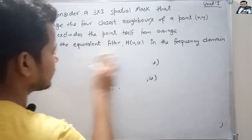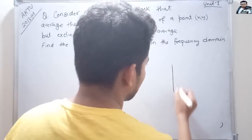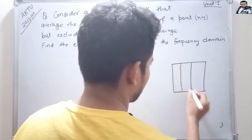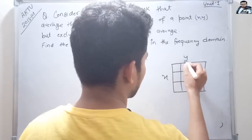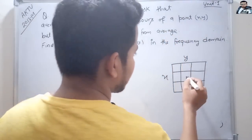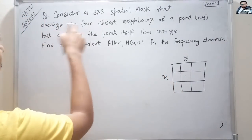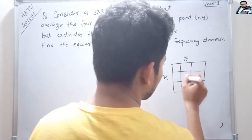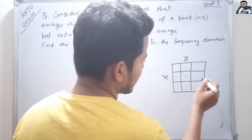Back to the question — here it says a 3x3 mask. Suppose this is the point (x, y) at the center. The 4 closest neighbors of the point (x, y) are the top, bottom, left, and right adjacent cells — these 4 points but not the center point itself.